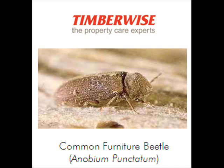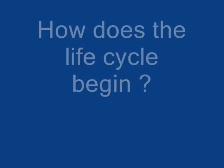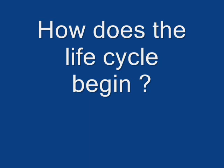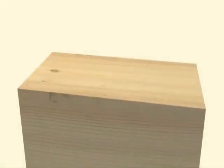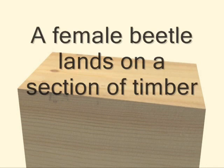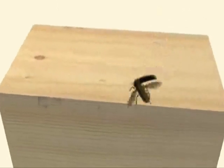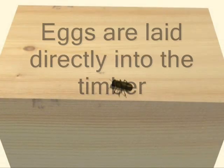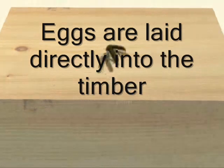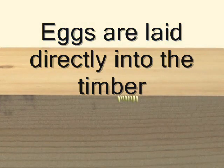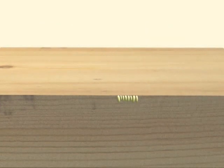So Neil, how does the life cycle begin? Well Mark, it's a chicken or egg scenario — which comes first. For the purpose of this discussion, however, we'll assume that an already pregnant female beetle has landed on a piece of timber. The female beetle starts the process by laying her eggs directly into the timber through cracks, crevices, existing flight holes, and other unprotected wood areas.